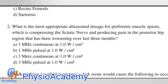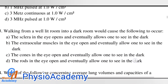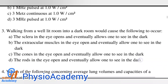Question number two: what is the most appropriate ultrasound dosage for piriformis muscle spasm which is compressing the sciatic nerve and producing pain in the posterior hip region, worsening over the last three months? Option A: 1 megahertz continuous at 1 watt per centimeter square. Option B: 1 megahertz pulse at 1 watt per centimeter square. Option C: 3 megahertz continuous at 1 watt per centimeter square. Option D: 3 megahertz pulse at 1 watt per centimeter square. The correct answer is option A: 1 megahertz continuous at 1 watt per centimeter square.